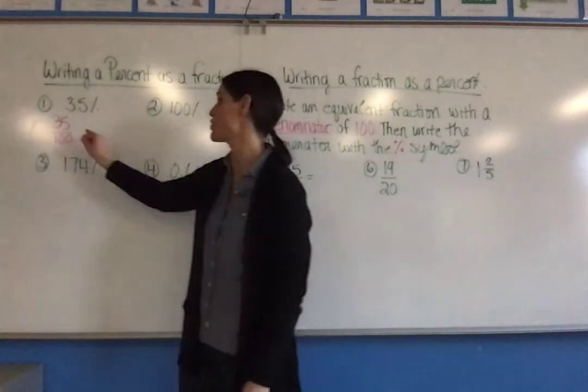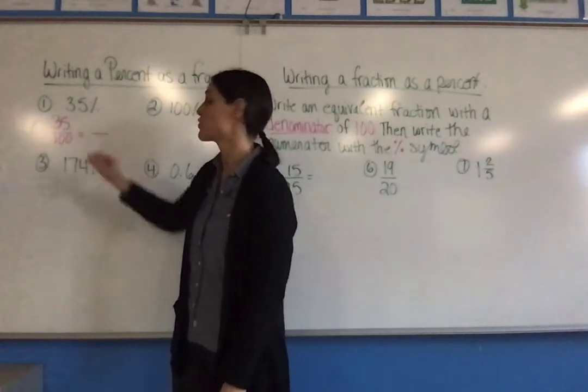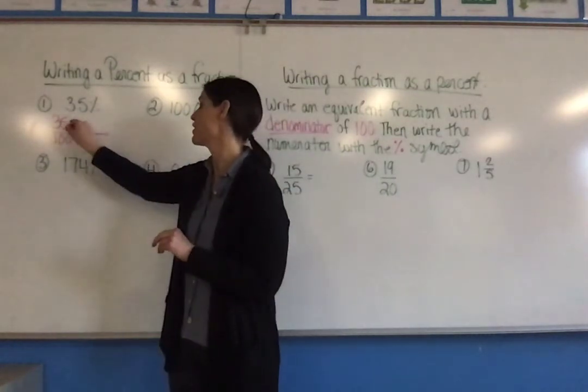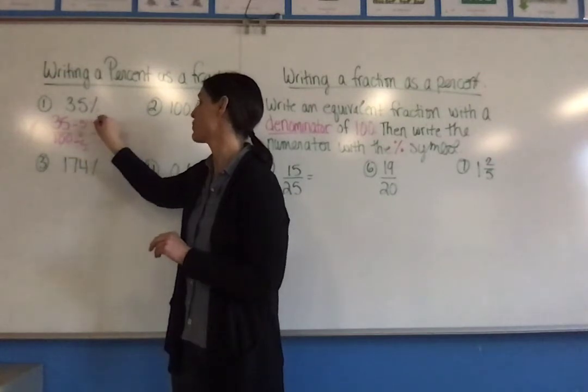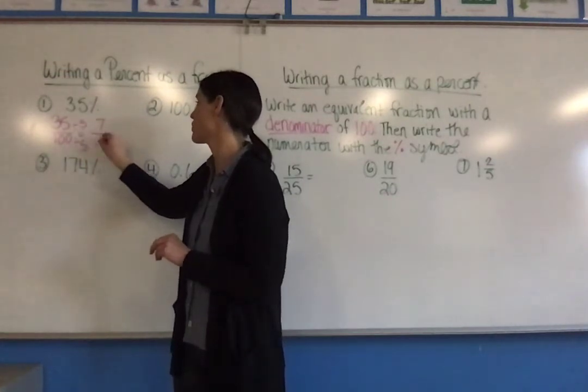Then the last thing we have to do is simplify it. So the greatest common factor for 35 and 100 is 5. So that would leave a simplified form of 7/20.